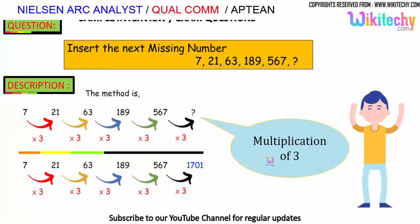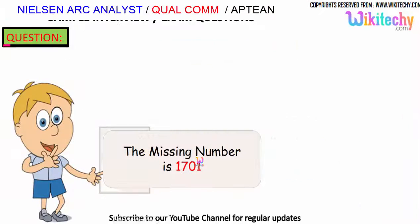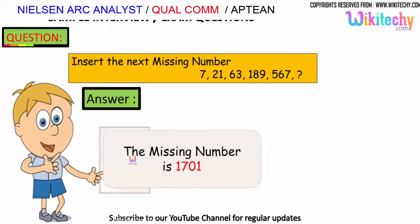The answer is 1701. It is a multiplication of 3 each time. So the missing number is 1701.